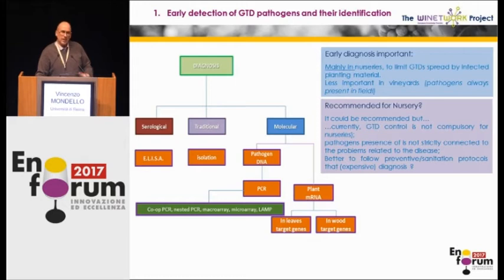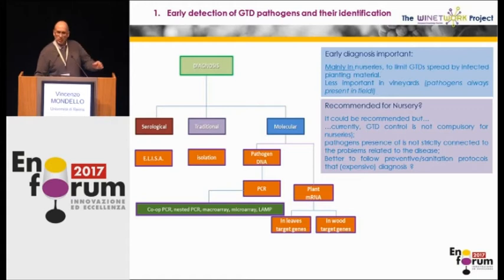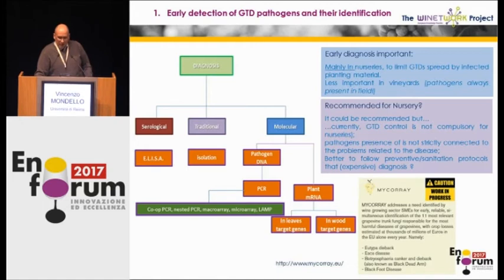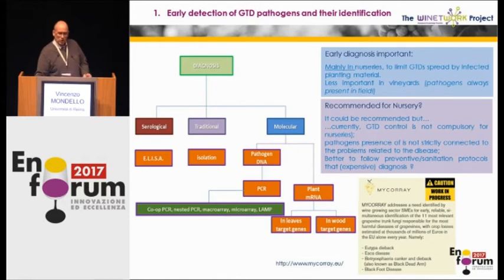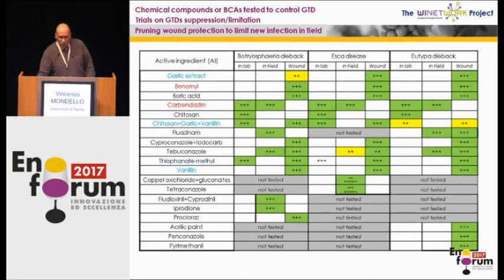It is also true that nurseries are not obliged to certify that plants are free of GTDs — only viroses have to be certified. Studies also evidence that there is not a certain correlation between the presence of the pathogen on the vine and the onset of the disease. One of the products of the research work is a microarray, which is about to be completed, and which created a protocol for analysis whereby, in the very same wood sample, you can identify up to 11 pathogens associated with GTDs. This is still under validation.